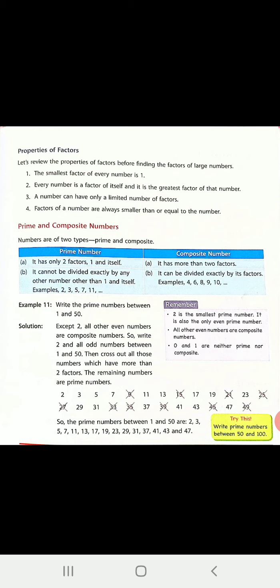On the other side, what is a composite number? Opposite to this, it has more than two factors. The numbers which have more than two factors are called composite numbers. It can be divided exactly by its factors, so all the factor numbers can divide that particular number.